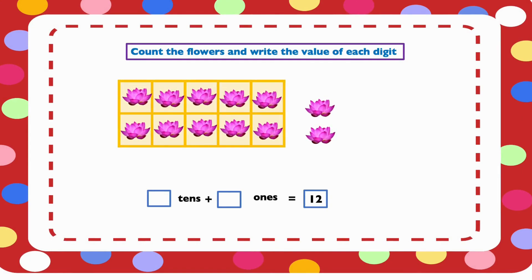Count the flowers and write the value of each digit. We have 12 flowers here. We want to find out the value of the digits in 12. So what is the value of 1 and what is the value of 2? Let's count the flowers: 1, 2, 3, 4, 5, 6, 7, 8, 9, 10.